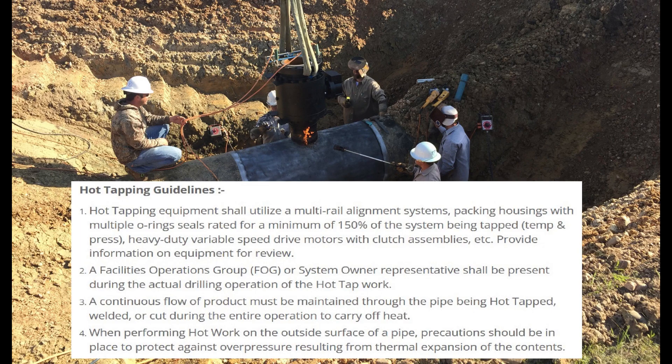Hot tapping guidelines: Hot tapping equipment shall utilize a multi-rail alignment system, packing housings with multiple O-ring seals rated for a minimum of 150% of the system being tapped (temperature and pressure), and heavy-duty variable speed drive motors with clutch assemblies. Provide information on equipment for review. A facilities operations group (FOG) or system owner representative shall be present during the actual drilling operation. A continuous flow of product must be maintained through the pipe being hot tapped, welded, or cut during the entire operation to carry off heat. When performing hot work on the outside surface of a pipe, precautions should be in place to protect against overpressure resulting from thermal expansion of the contents.